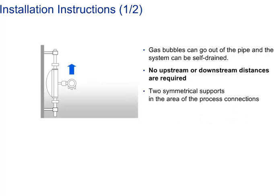Supports should be installed symmetrically either side of the flow meter and close to the process connections, but not directly on the meter housing.